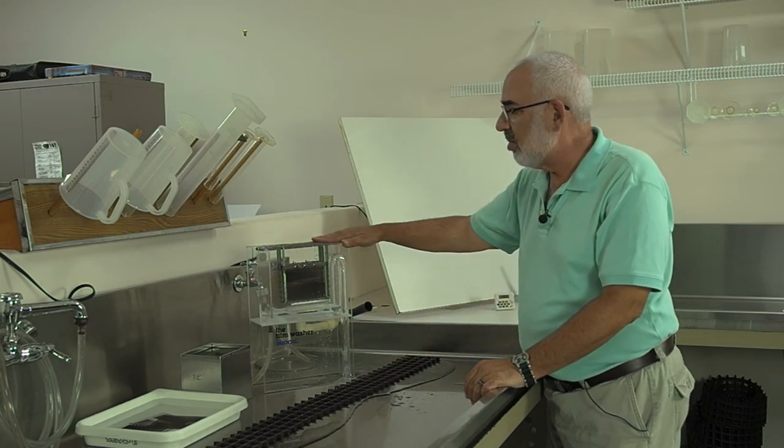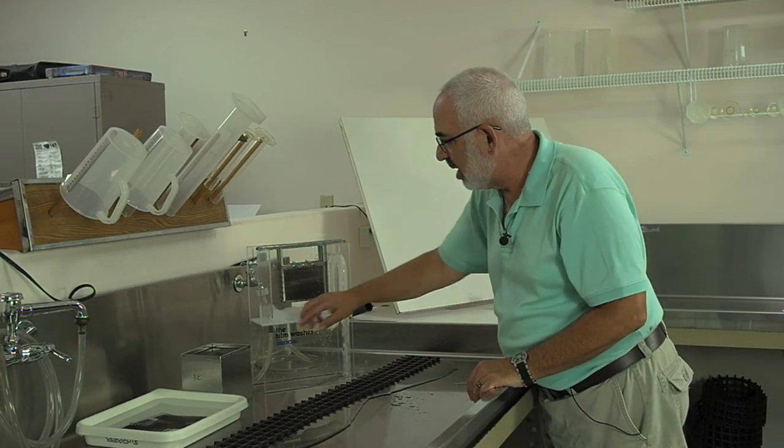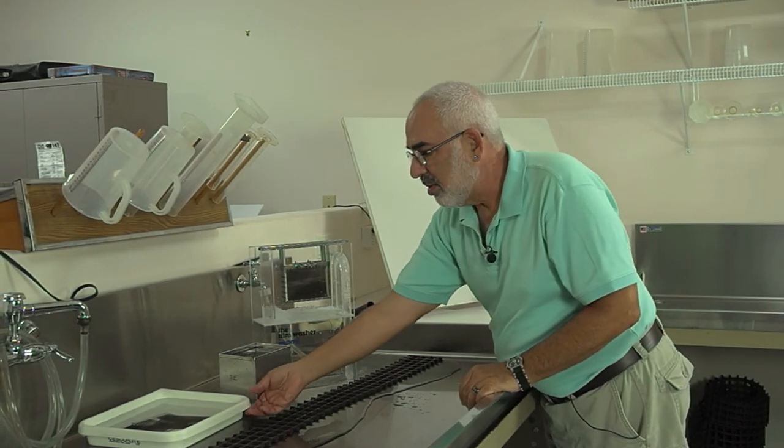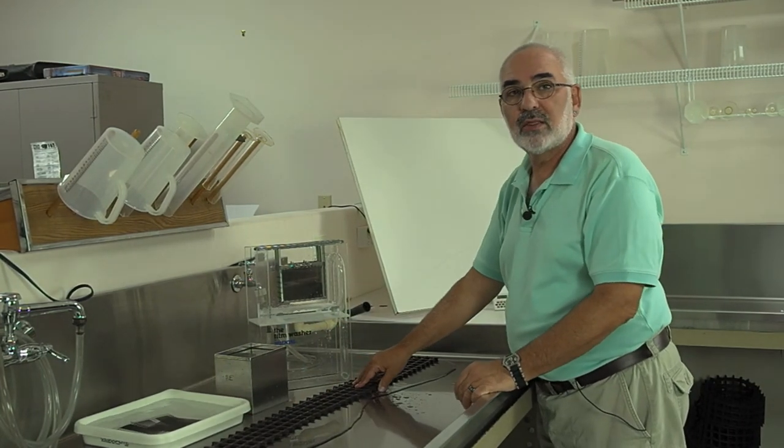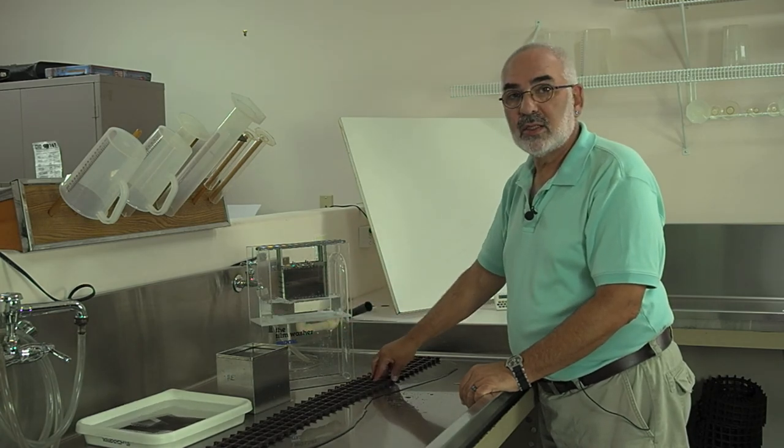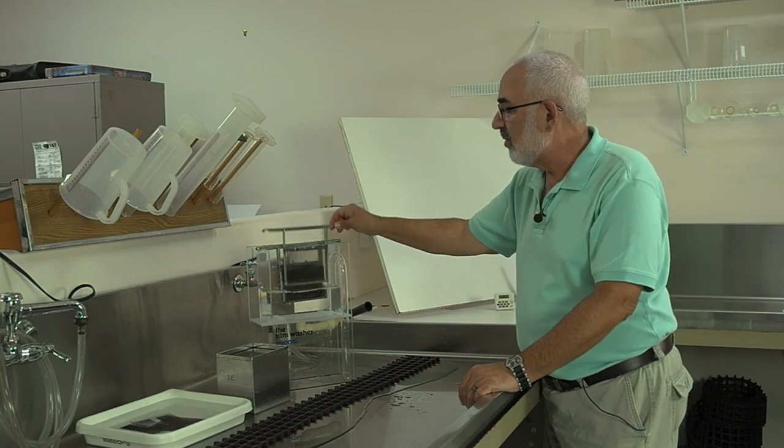This would be my number one choice for film washing. And once it empties, it's going to fill again. Using one of these tanks and doing it manually is my number two choice. My least favorite is just washing them in a tray because there's the most chance of scratching. These two methods, it's the least chance of scratching. So I'd recommend either of these two, depending on what you find. But you're going to have to find hangers for them.